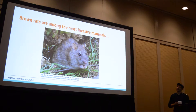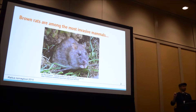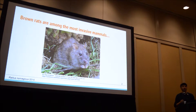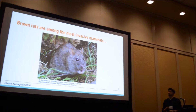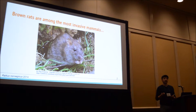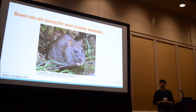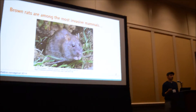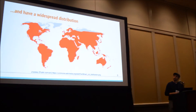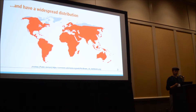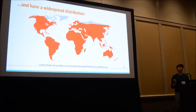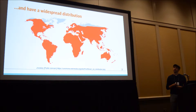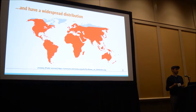When I'm talking about invasive rats, I'm talking particularly about this species here, Rattus norvegicus, or the brown rat. These are actually among the most invasive animals on the planet. If we look at their global distribution, shown in red here, they're found on every inhabited continent. So this is actually a global issue.